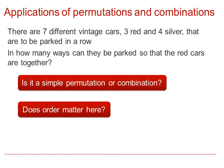This is another example on the applications of permutations and combinations. If we have seven different vintage cars — three red and four silver — that are to be parked in a row, in how many ways can they be parked so that the red cars are together? We need to ask: is it a simple permutation or combination problem? Does order matter here? It is not actually just a permutation or a combination, because the red cars need to be together.